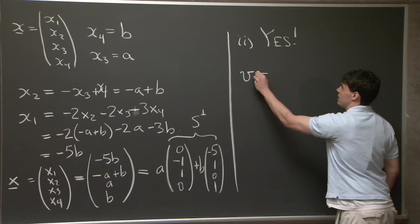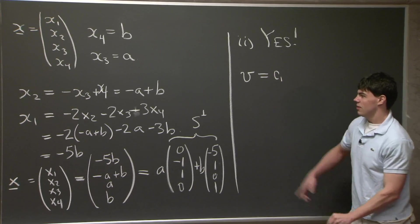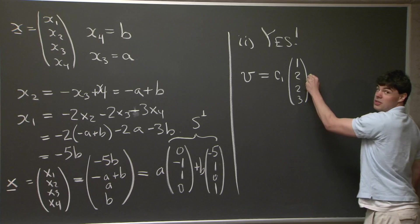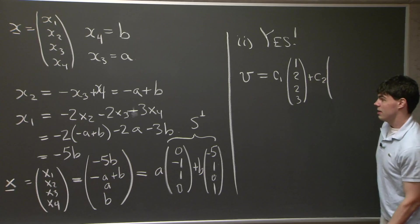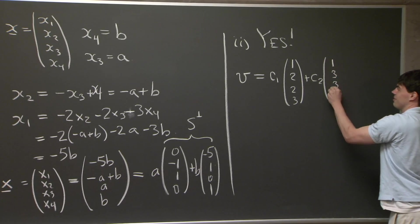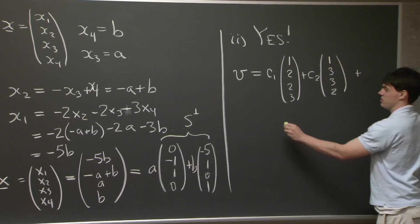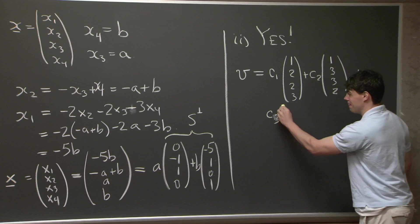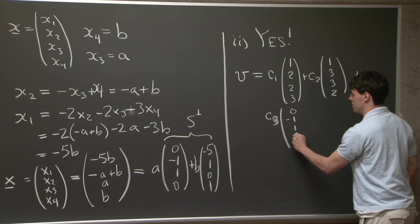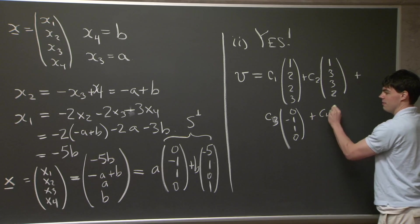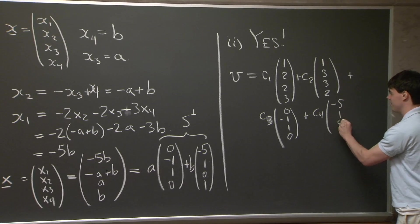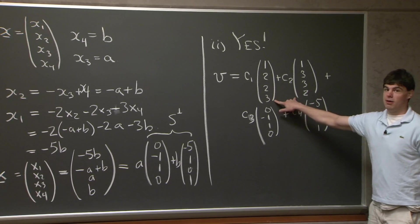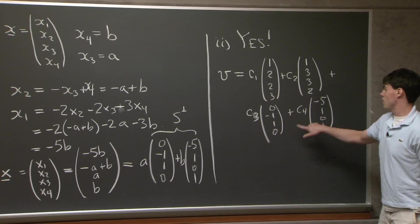Well, if I have a vector v, what I can do is I can try and write it as some constant c1 times the vector (1, 2, 2, 3) plus c2 times the vector (1, 3, 3, 2) plus c3 and c4 times the vectors in S perp.